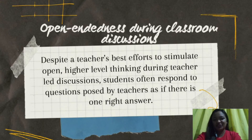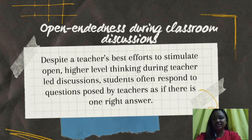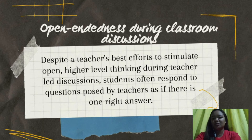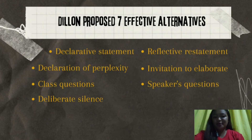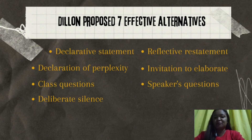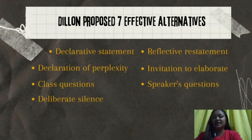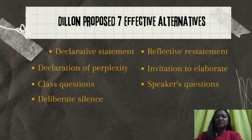Open-endedness during classroom discussions: despite a teacher's best effort to stimulate open, higher-level thinking during teacher-led discussions, students often respond to questions posed by teachers as if there is one right answer. There are alternatives — a teacher's use of specific statements and silence as well as carefully constructed questions from peers. Dillion proposed seven effective alternatives to direct questioning: first, declarative statement; second, reflective restatement; third, declaration of perplexity; fourth, invitation to elaborate; fifth, class questions; sixth, speaker's questions; and lastly, deliberate silence.